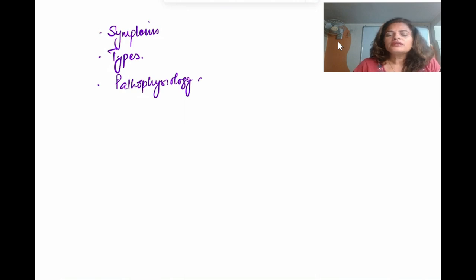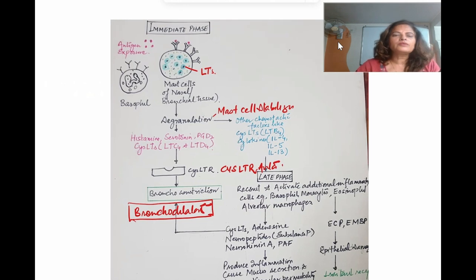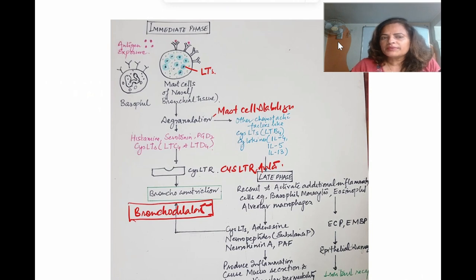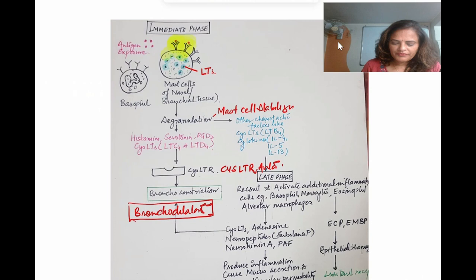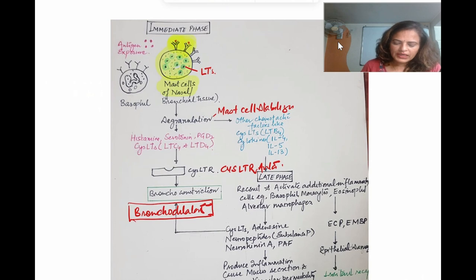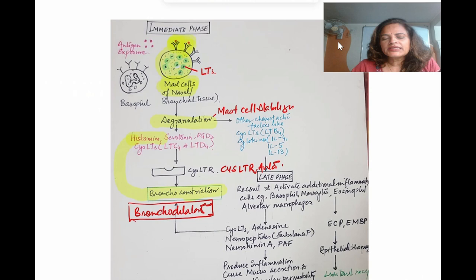In the pathophysiology, what was earlier considered most important is that bronchial asthma is purely a type 1 hypersensitivity reaction. In this reaction, the antigen (shown in red) interacts with antibodies (shown in black) already present on the surface of the mast cell. The antigen-antibody reaction causes degranulation of the mast cell, releasing histamine, which causes bronchoconstriction. So it was purely considered a type 1 hypersensitivity reaction.